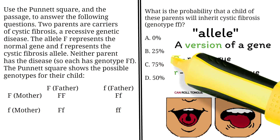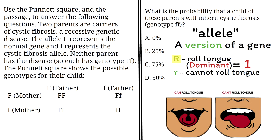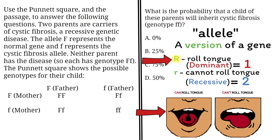The tongue-rolling gene, capital R, is a dominant allele. A dominant allele is an allele that shows its trait even if there is only one copy of it — meaning you must inherit at least one capital R allele in order to roll your tongue. The non-tongue-rolling allele, lowercase r, is a recessive allele. A recessive allele only shows its trait if there are two copies of it, so you must inherit two lowercase r alleles to be unable to roll your tongue. Note that dominant alleles are always represented as capital letters, and recessive alleles are always represented as lowercase letters.